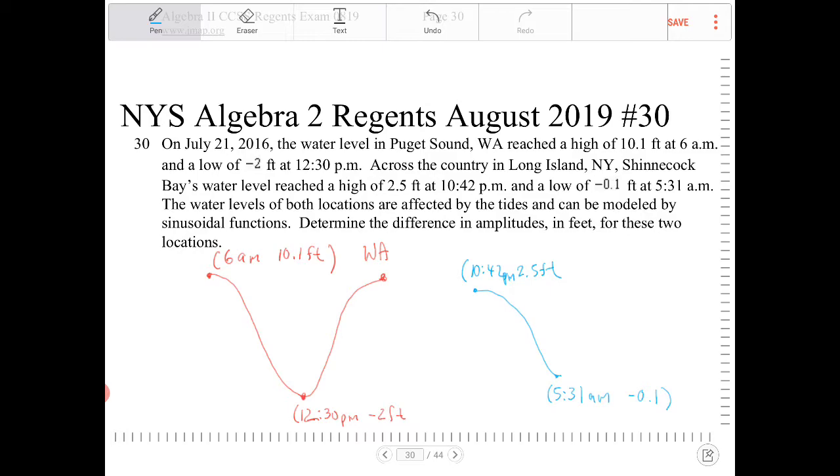The water levels of both locations are affected by the tides and can be modeled by sinusoidal functions. I've already made that assumption, but thank you for confirming that. Determine the difference in amplitudes in feet for these two locations.